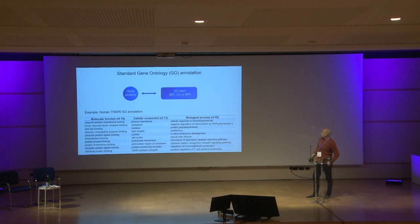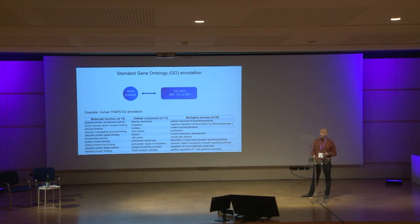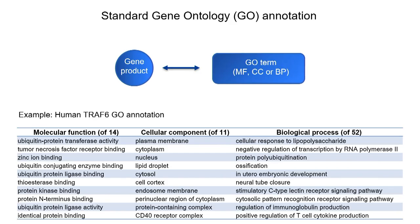Standard gene ontology annotation is the association of a gene product with a GO term. GO terms are divided, as you probably know, into three different categories: molecular function, cellular component, and biological process. These terms represent an isolated biological characteristic, which is very useful to annotate proteins. However, as curation progresses, there are more and more papers curating with GO, and proteins receive more and more GO terms.